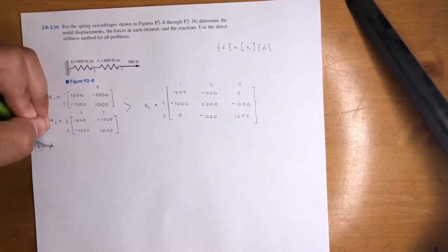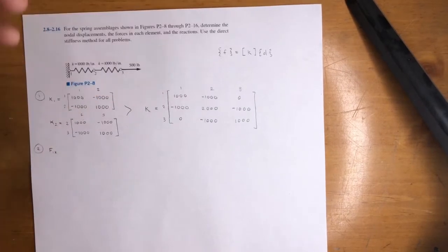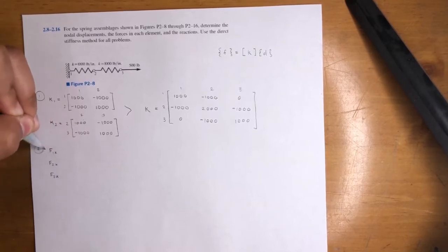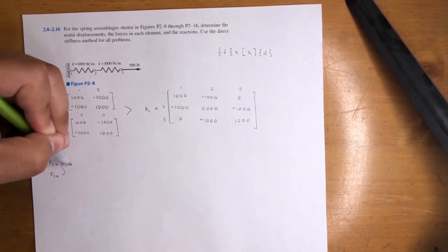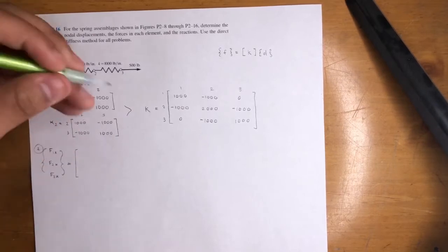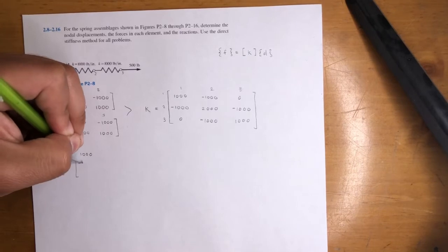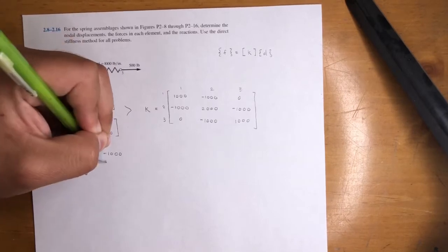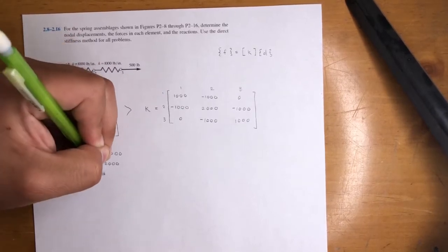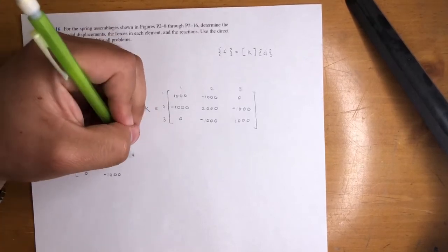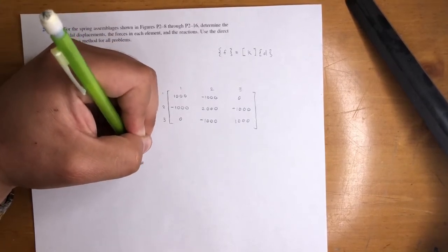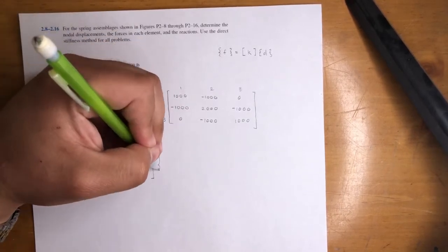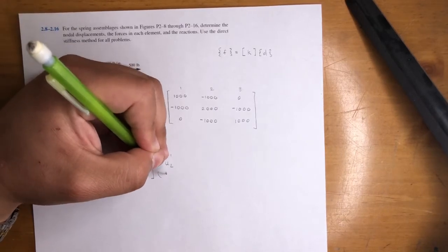Now let's assemble the global equation. The force vector is f1x, f2x, f3x, and that equals the global stiffness matrix — 1,000, negative 1,000, 0; negative 1,000, 2,000, negative 1,000; 0, negative 1,000, 1,000 — times the displacement vector u1, u2, u3.